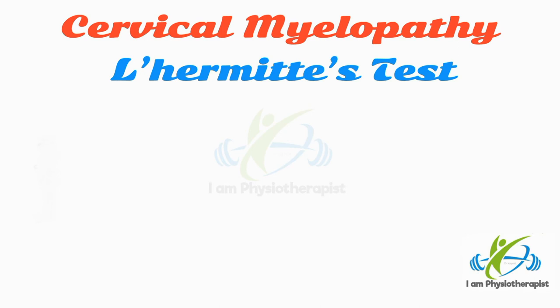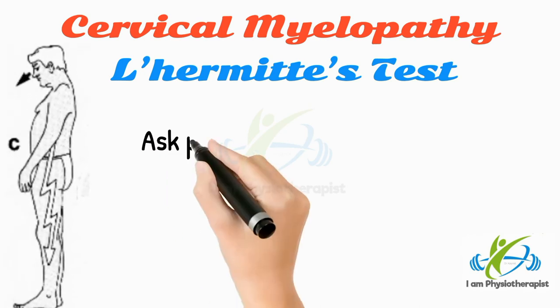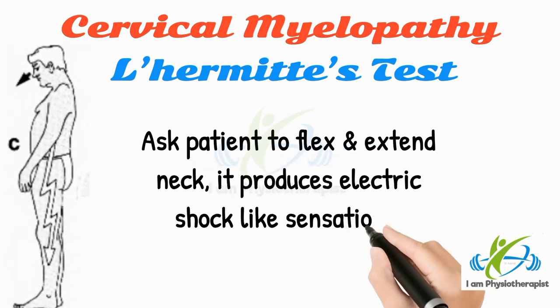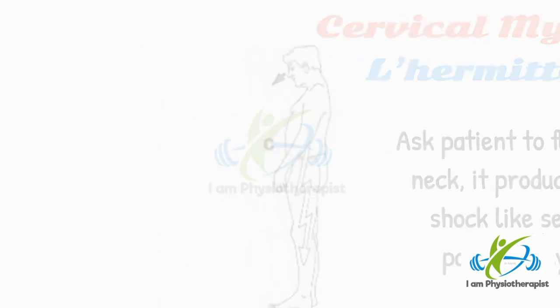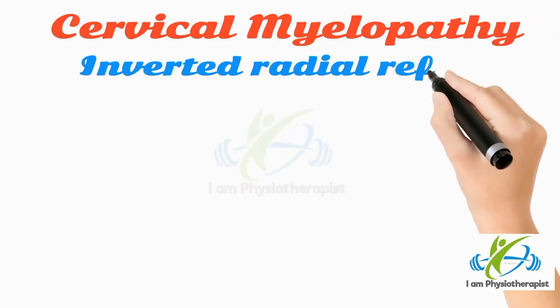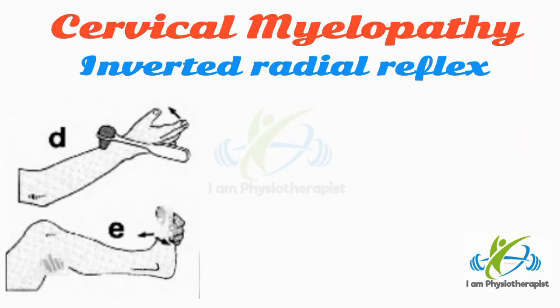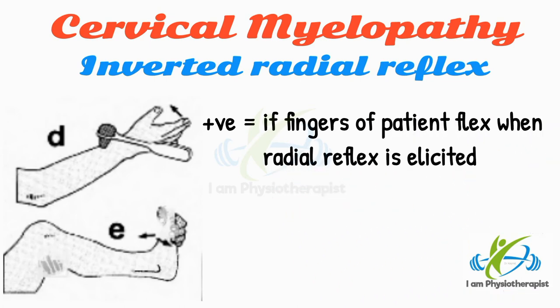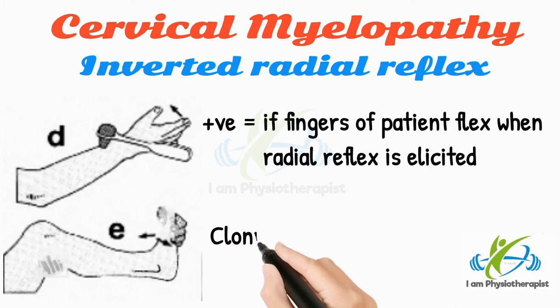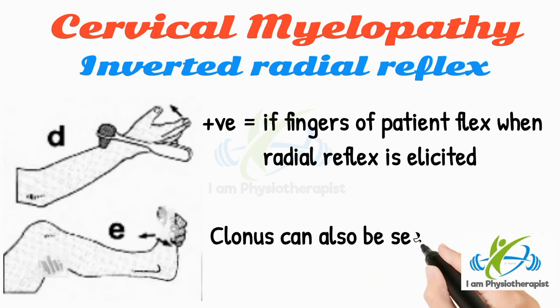Lhermitte's test: ask the patient to flex and extend the neck — it produces electric shock-like sensations, particularly in the legs. Inverted radial reflex: the test is considered positive if the fingers of the patient flex when the radial reflex is elicited with a reflex hammer. In cervical myelopathy, clonus can be seen.